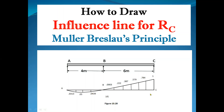In the previous video we already discussed Mueller-Breslau principle. To draw the influence line diagram for any function, first we remove the constraint related to that function, then give unit deformation in the direction of that function. The deflected shape obtained represents the influence line diagram. Initially, since we don't know the force required for unit deformation, we apply a unit force instead.